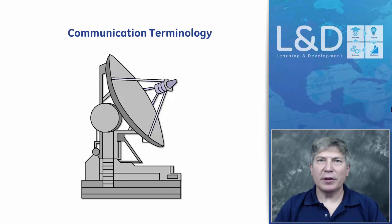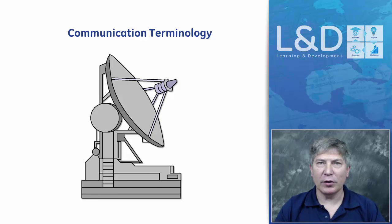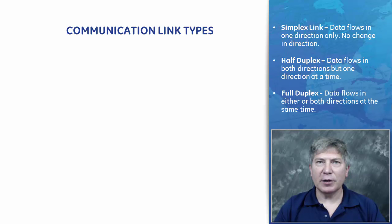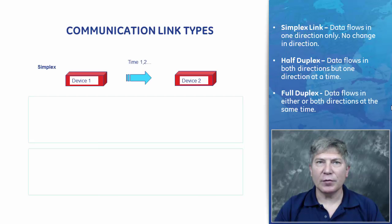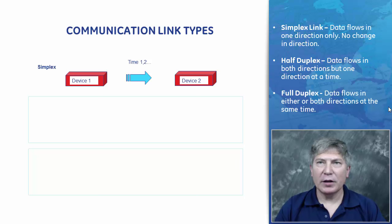There has always been a need to transfer information between people, businesses, etc. The main objective of a data communication system is to transfer information from one place to another. Let's discuss the different types of communication links. First, we have simplex communication. This is a communication channel that sends information in one direction only — it's a one-way street. For example, this would be a radio or a TV broadcast.